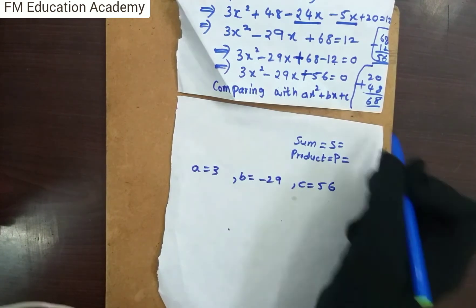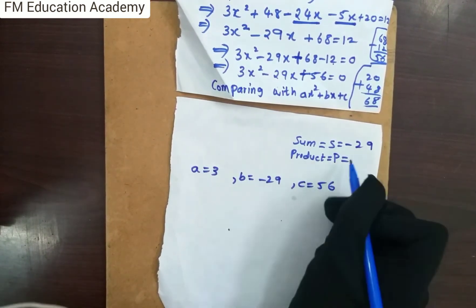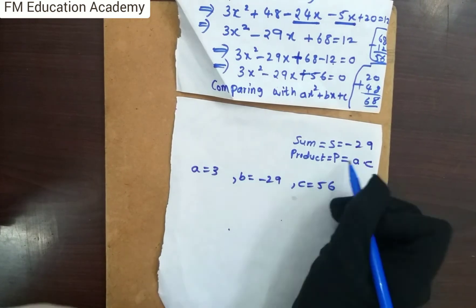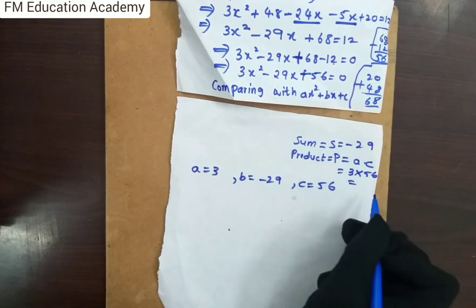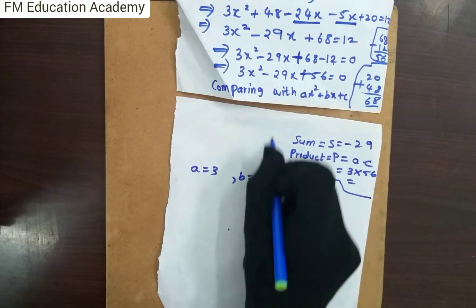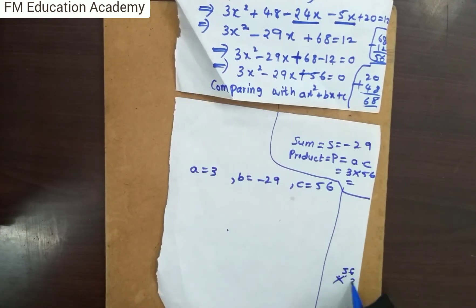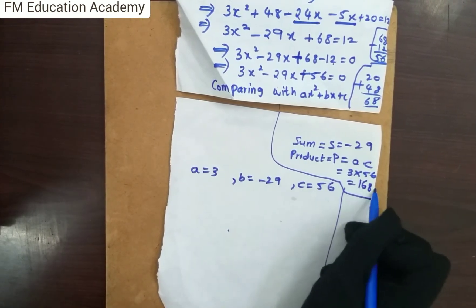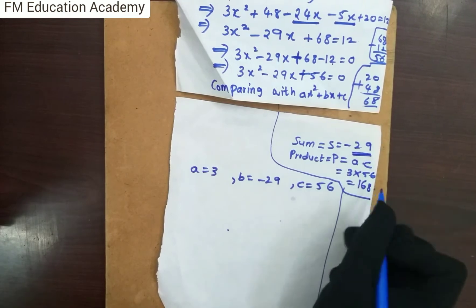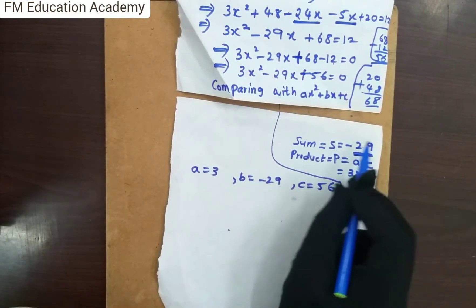In the factorization method, sum S is always the middle term coefficient, so S = −29. Product P is always a × c, so P = 3 × 56 = 168. I need to find factors of 168 that add up to −29.